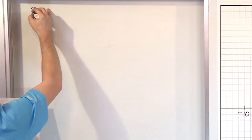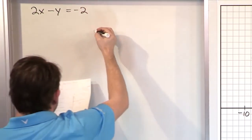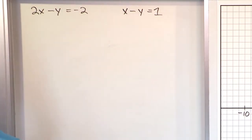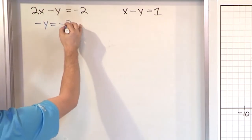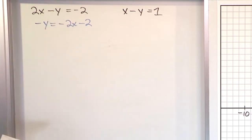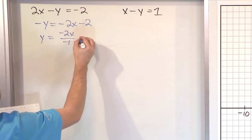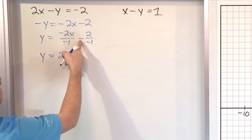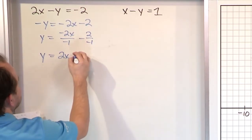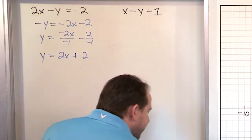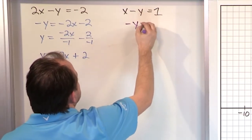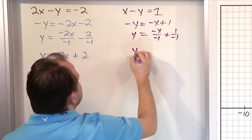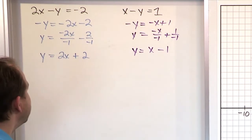For our next set of equations, we'll solve by graphing. It's going to be 2x minus y equals negative 2, and the other equation is x minus y is equal to 1. The easiest way to graph them is to change them into slope-intercept form. So we solve for y: move the 2x over by subtraction to get negative y equals negative 2x minus 2, then divide by negative 1. So y equals 2x plus 2. That's equation number 1. Equation number 2 is easier — move x over by subtraction to get negative y equals negative x plus 1, then divide by negative 1 to get y equals x minus 1.